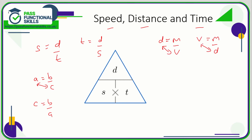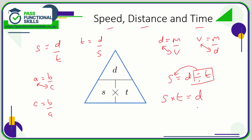If speed is distance divided by time, the only formula we need now is the distance one. To get the distance formula, we get rid of the 'divide by time' and move it across to the other side of the equal sign. When you move something from one side of an equation to another, you change the sign to the opposite — the opposite of dividing is multiplying. So speed multiplied by time equals distance. There are your three formulas: speed is distance divided by time; flip the S and the T to get time equals distance over speed; and speed times time equals distance. Learn the triangle, or learn the algebra — whichever works best for you.